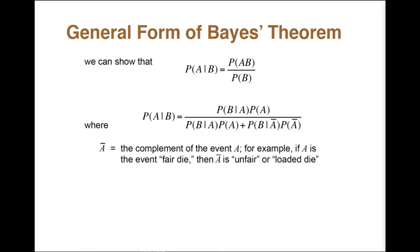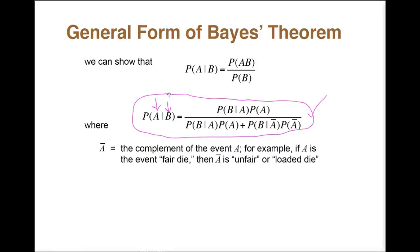The simple form of Bayes' law can now be written this way. The probability of A given that B has already happened can be rewritten using this expanded form. The A with a line over it means the complement of A — meaning event A did not happen. For example, if A was a fair die, then the complement of A means we have an unfair or loaded die. I'm going to break this down in decision tree form on the next slide so you can see what this is actually trying to say.